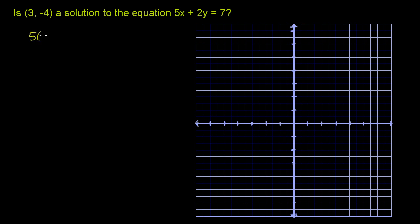So we have 5 times 3 plus 2 times -4. This is equal to 15 plus -8, which does indeed equal 7.